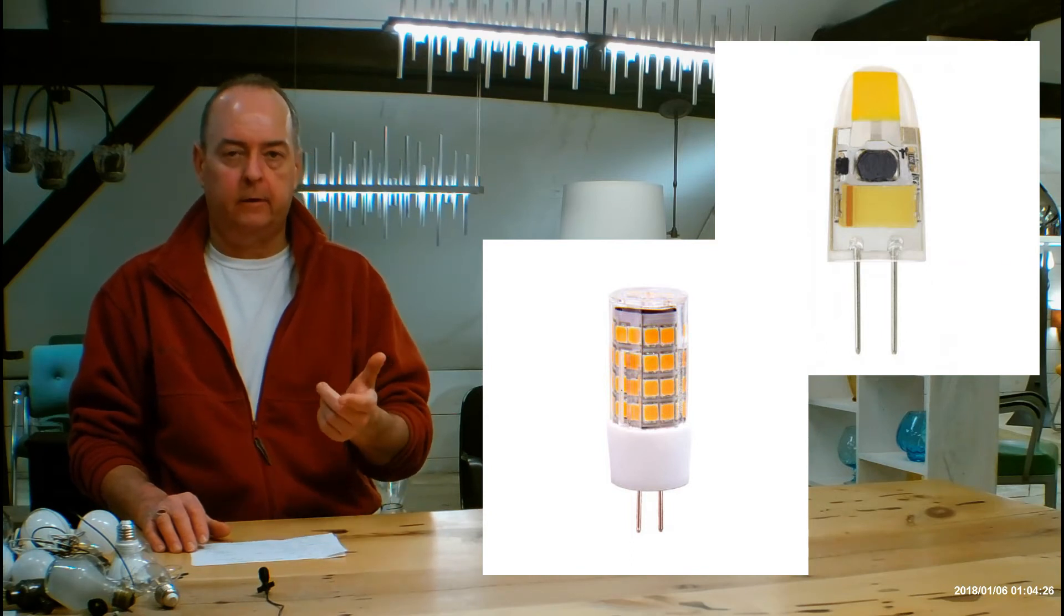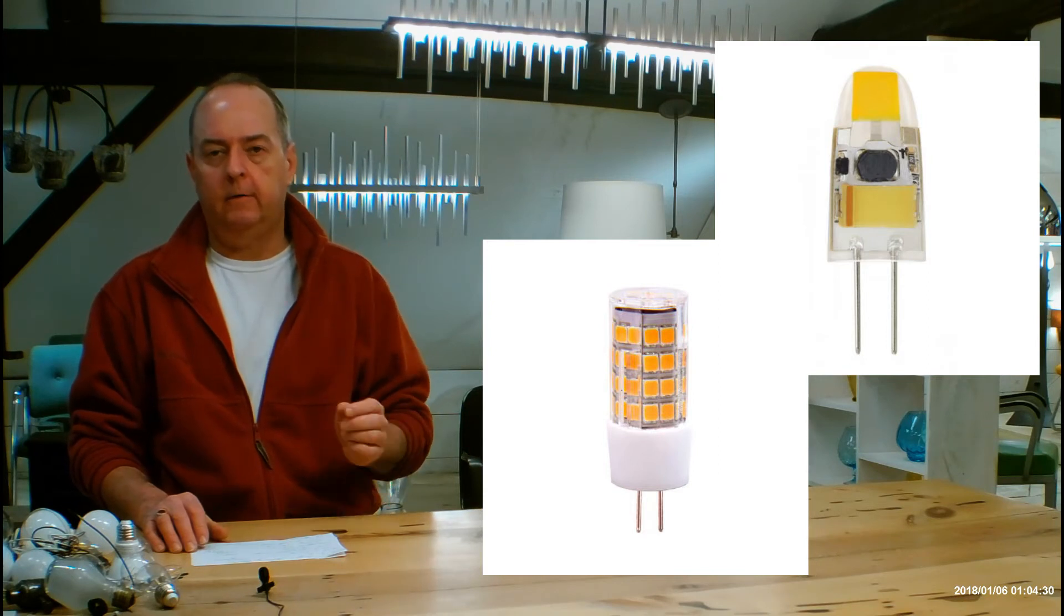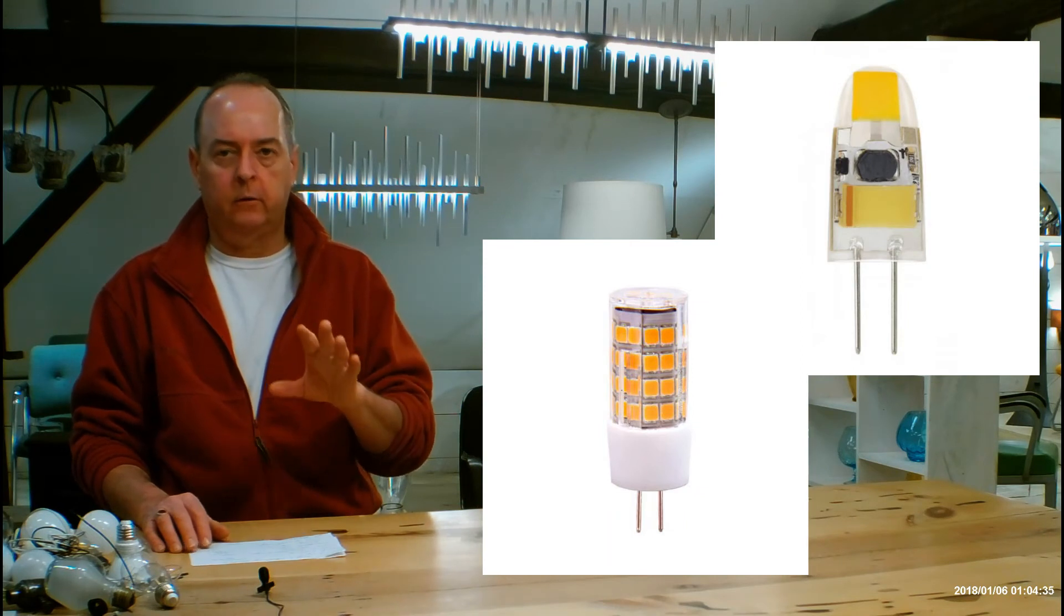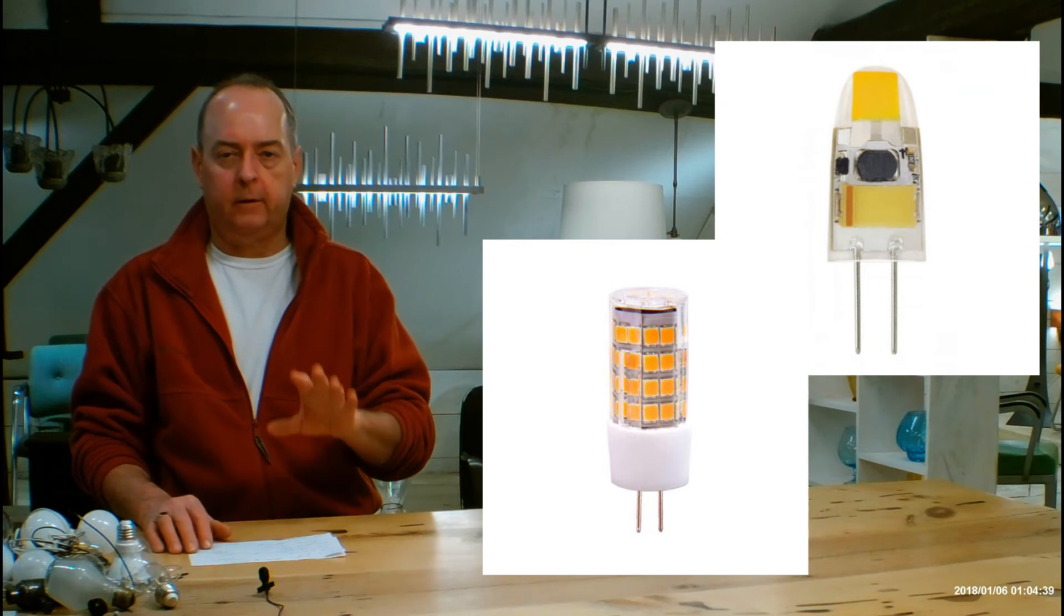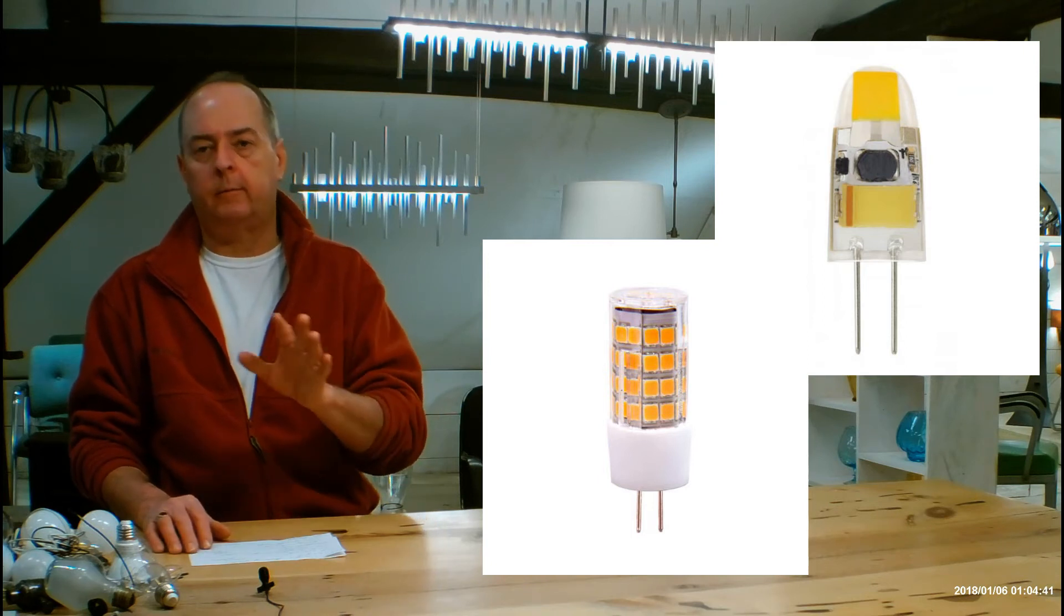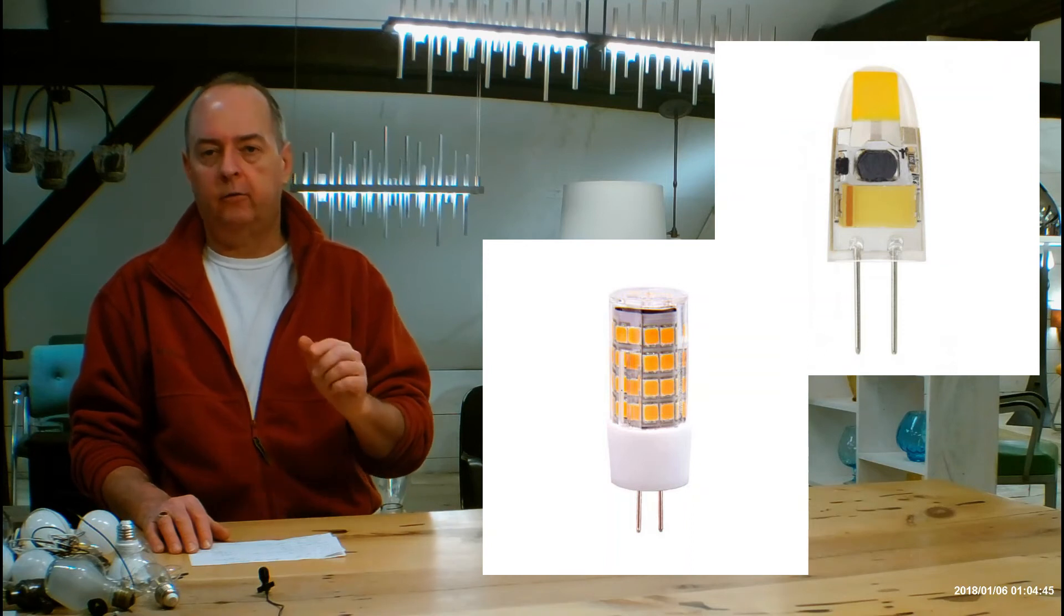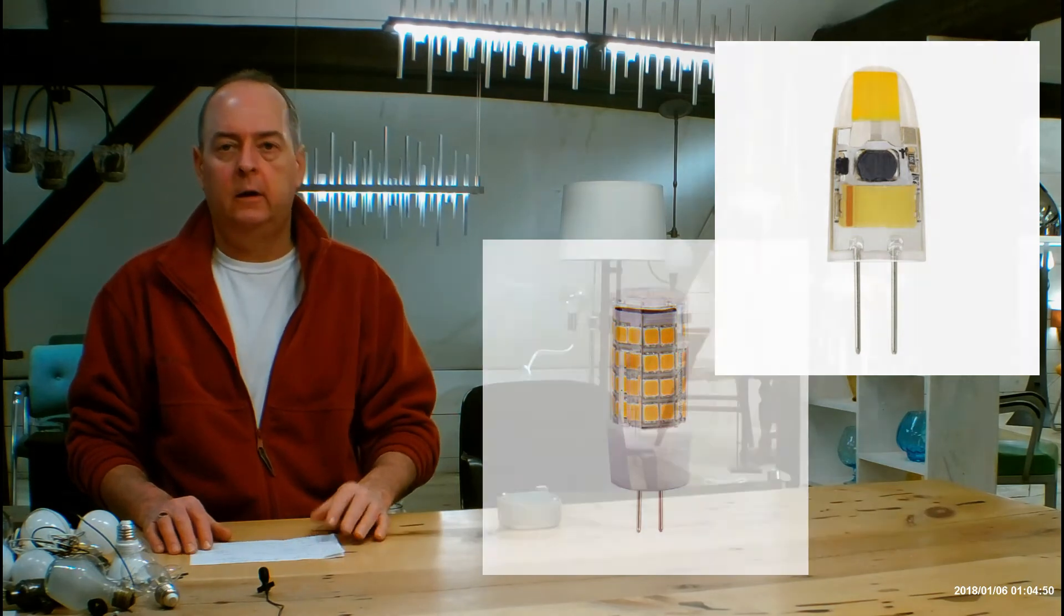The best way to find them is to go on Amazon. In that search bar at the top, put in G4 LED, and a whole bunch will pop up. It's really important to do your homework. Look at those very carefully because some are dimmable, some are not. This is a dimmable fixture. If you want to go that direction, make sure you buy dimmable versions of the bulbs.